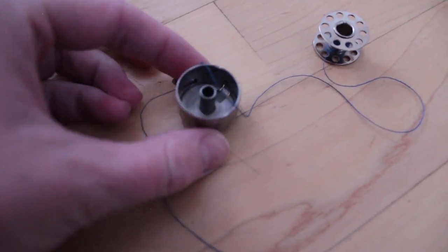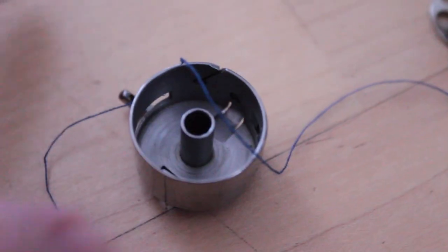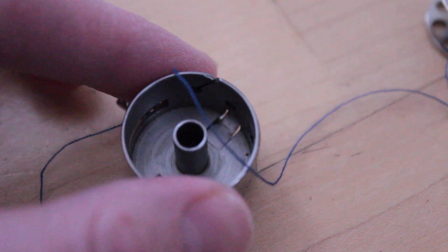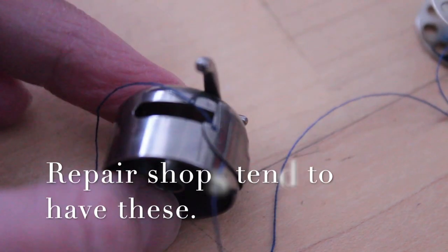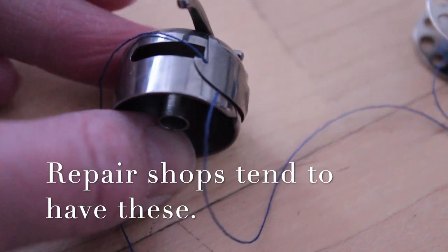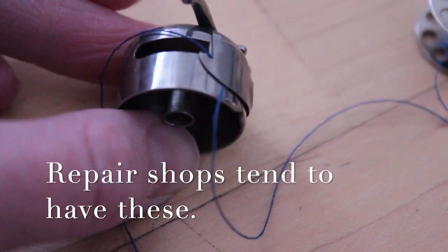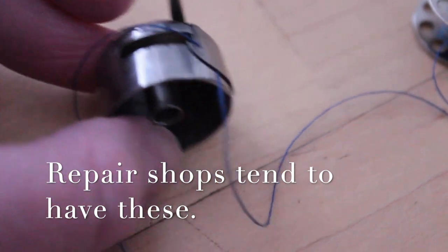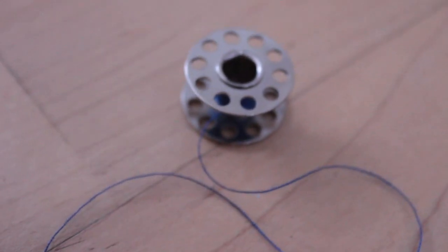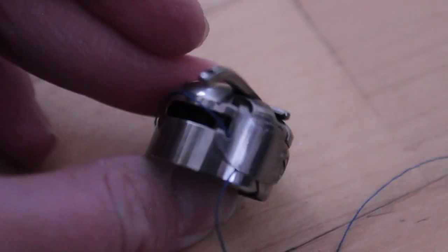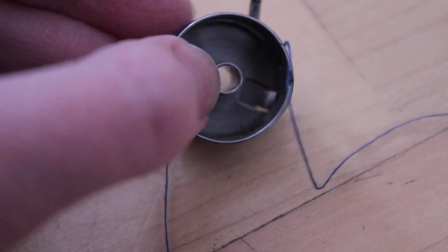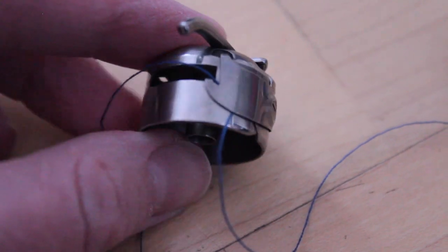You cannot use any other bobbin casing device in this machine. You have to buy something that has been created for a side loading bobbin. Basically, you have to buy something that's very specific to this machine and it is discussed at length in the manual as well.